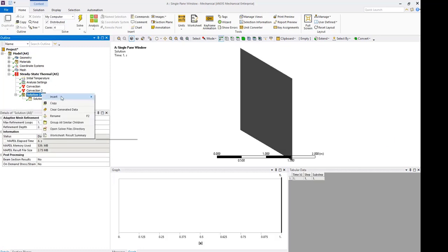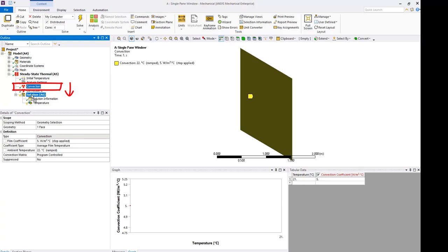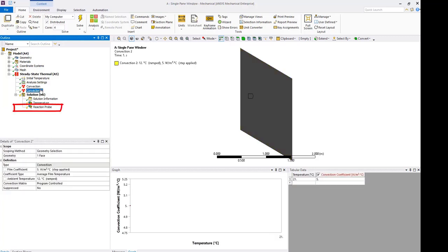Insert temperature to examine temperature distribution through the thickness of the glass. Drag and drop convection from steady state thermal branch to solution to create the first reaction probe.